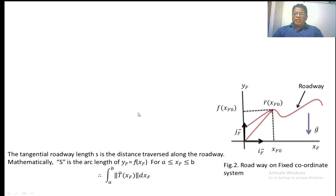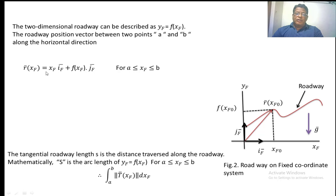The position vector is a vector which is the line joining the point on the roadway to the origin of a fixed coordinate system. Now we are going to find out the generalized expression for the position vector, because we are going to find out the tangent of the position vector that lies only in the roadway. Here we have taken two points on the x-axis. The position vector between points a and b is defined as rf bar of xf equal to xf times if bar plus f of xf times jf bar, where xf lies between a and b. xf is the coordinate of the point on the xf axis, and f of xf is the coordinate of the point on the yf axis.